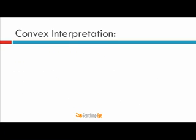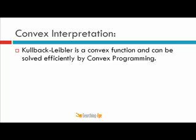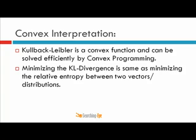For the convex interpretation, I will prove that KL divergence can be solved as a convex program because it is a convex function. Kullback-Leibler divergence is a convex function and can be solved efficiently by convex programming. The second point is that minimizing the KL divergence is the same as minimizing the relative entropy between two vectors or distributions. In optimization we deal with functions or vectors; in machine learning and statistics we are concerned with distributions, identifying the difference between two distributions.